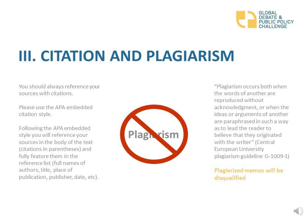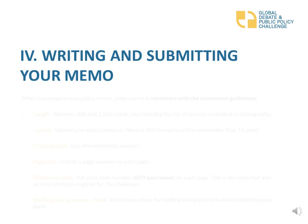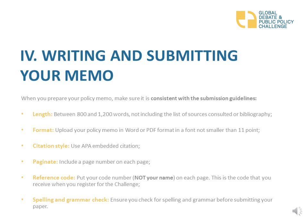Now let's move on to writing and submitting your memo. When you prepare your policy memo, make sure it is consistent with the submission guidelines. Make sure that it is between 800 to 1200 words long, not including the list of sources consulted or the bibliography. When you upload your policy memo, it should be in Word or PDF format and in a font no smaller than 11 point. Use APA embedded citation and include a page number on each of the pages. Put your code number and not your name on each of the pages — this is the code that you receive when you register for the challenge. And make sure to check for spelling and grammar before sending in your policy memo.